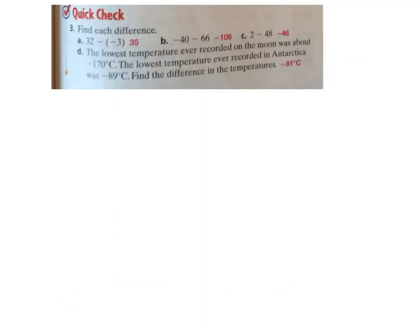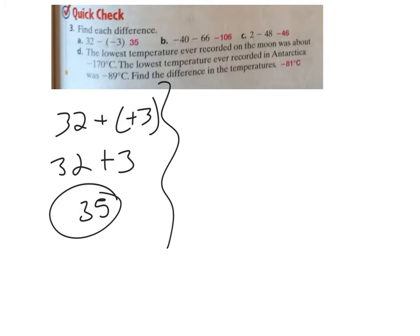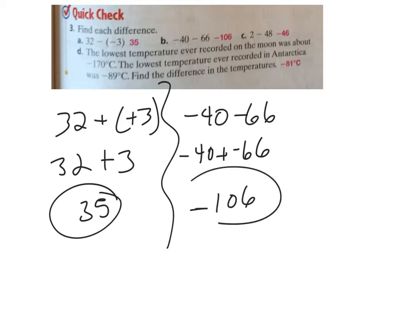Alright, so find the difference. So 32 minus - let me write that first one out - 32 minus negative 3. Leave the first number alone. These two work together, right? So 32 plus 3. Well, same sign - that's an easy one. Add them, 35, it's positive. B, negative 40 minus 66, so that again if we apply that add opposite property, however you want to think about it, negative 40 plus a negative 66 means I add them. They're going to be negative by the way, and 40 plus 66 is 106.